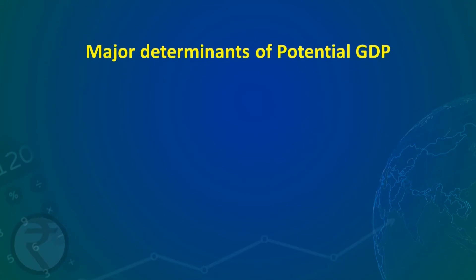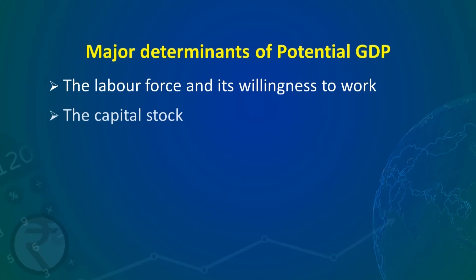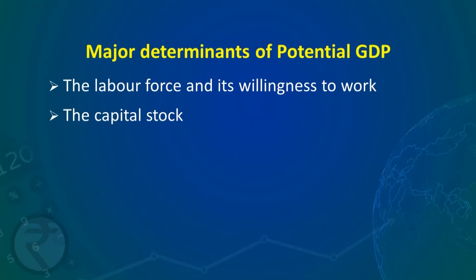The major determinants of potential GDP are: first, the labor force and its willingness to work — the available labor force naturally decides how much output can be produced. Second, the capital stock — the machines, equipment, and capital available in the economy determine how much output can be produced. Third, technology — countries where technology is improving day by day have higher potential GDP than countries with low levels of technology.